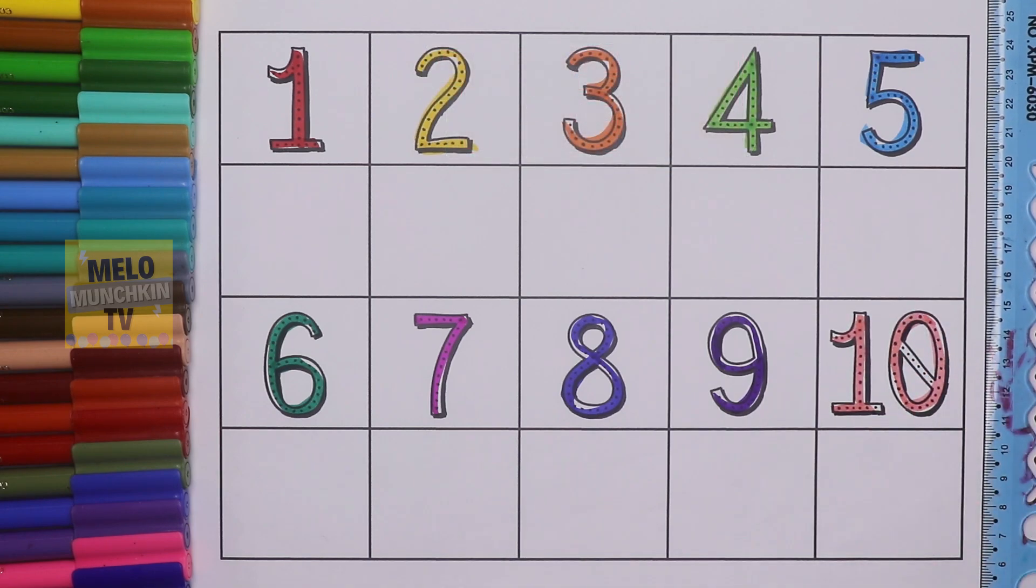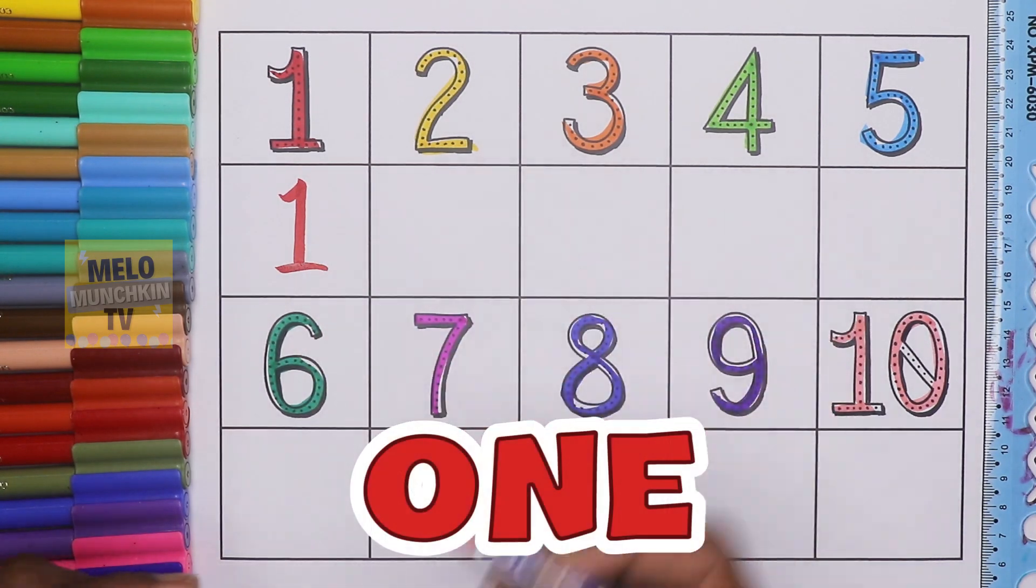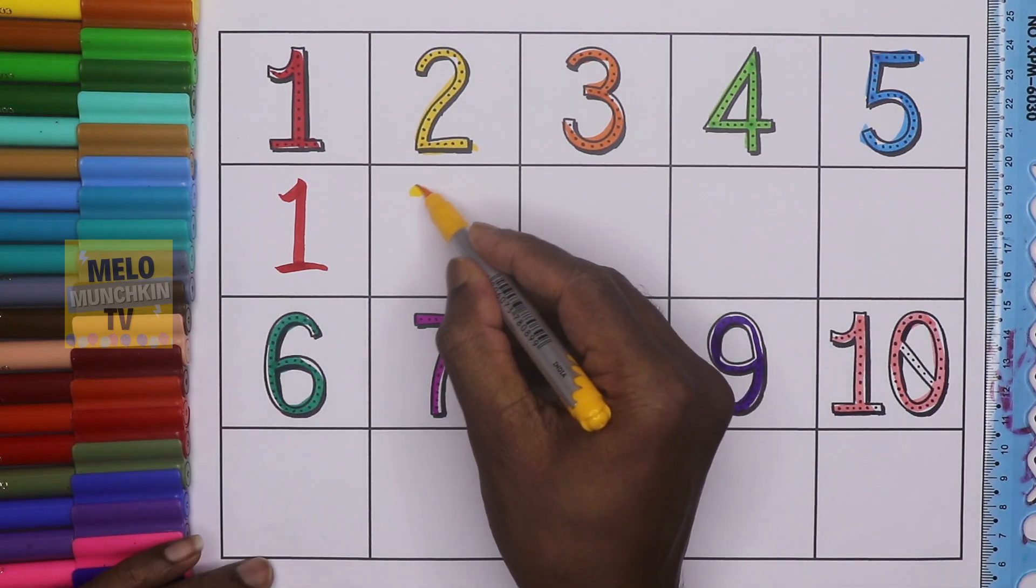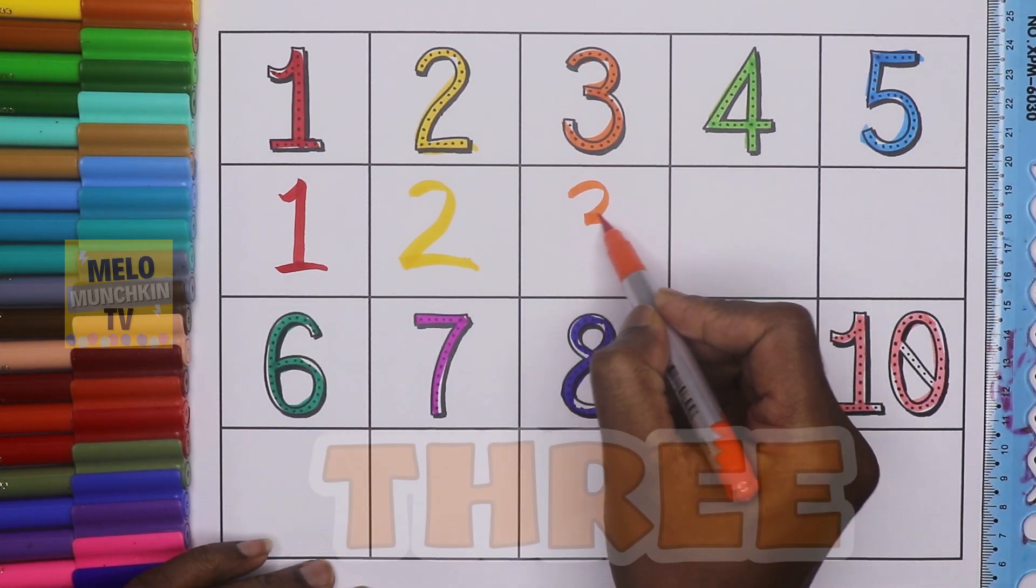We have completed our numbers from 1 to 10. Now I'll write once again to practice. This is number one: O-N-E, one. This is number two: T-W-O, two. This is number three: T-H-R-E-E, three.